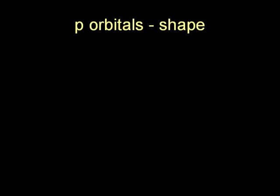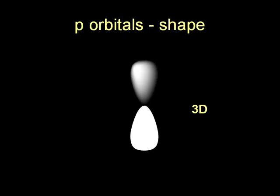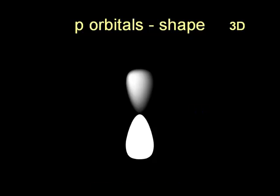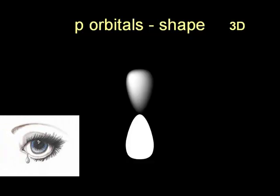Now remember, for the P subshell, we have three individual P orbitals. These three orbitals all have the same shape. The shape of each P orbital resembles that of a dumbbell, so the shape is commonly described as being dumbbell-shaped. Now remember, this is a three-dimensional shape. It can also be described as two teardrops, where the narrow ends are facing each other. Each of these teardrop-shaped parts is referred to as a lobe.